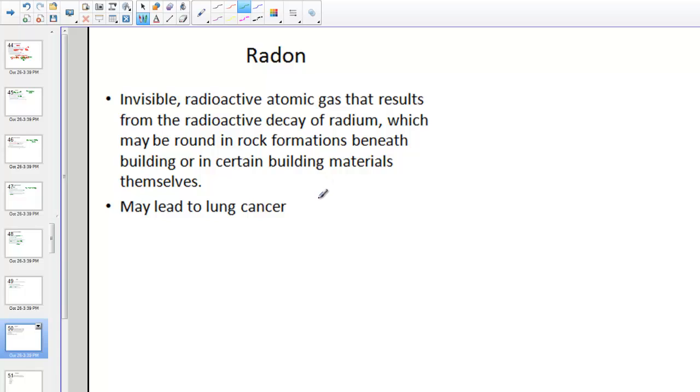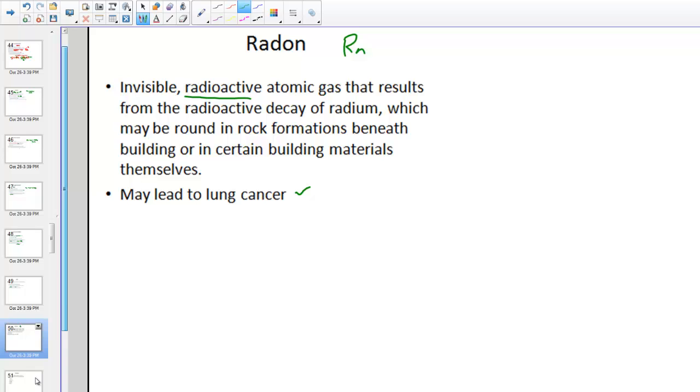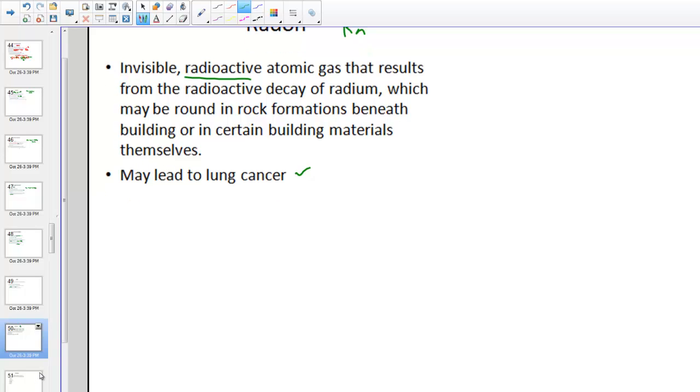And another gas considered a pollutant is called radon. Radon is an invisible radioactive atomic gas that results from the decay of radium, which may be found in the rock formations beneath certain buildings, certain materials themselves. And again, these lead to cancer as any radioactive material would. We often get our homes tested in certain parts of the country for radon. We try to limit our exposure to this naturally occurring radioactive gas, just to be sure we're not living on top of a radon deposit.